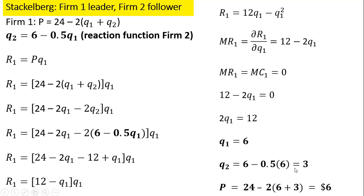Plugging the output of firm 1 and firm 2 into the market inverse demand, we get a market price of $6.